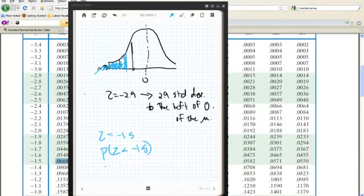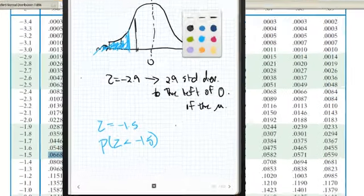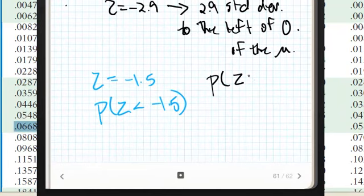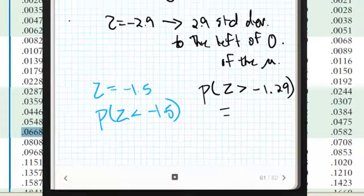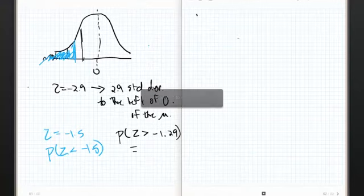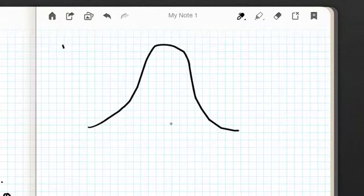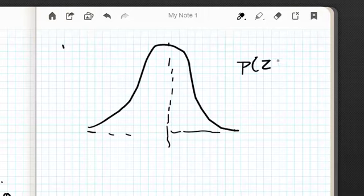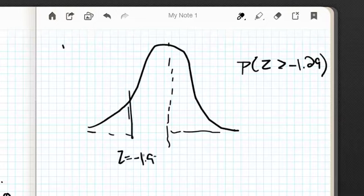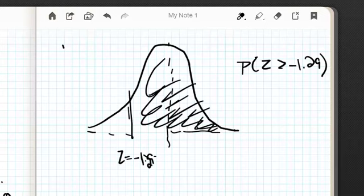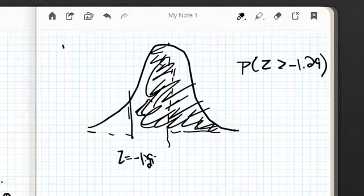All right, how about this? What if I'm looking for this guy? Let me change my colored pencils again. Let's go back here. What if I'm looking for the probability that z is greater than, say, negative 1.29? Now, this is going to take some thinking. But, okay, negative 1.29. You know what? I'm going to get bigger here, and I'm going to make a new curve. All right, so here we go. Now, we're starting to look like that anaconda that I said. All right, so I'm looking for the probability that z is greater than negative 1.29. So, one standard deviation, we'll just call this just for giggles, z equals negative 1.29. But, this time, I'm looking for the area to the right of that z-score. I'm looking for all of that area.